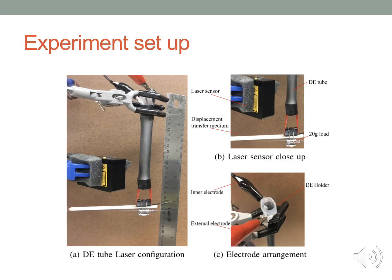And here is the experiment setup. The black and red electrodes were connected to the high-voltage amplifier to act on the movement of the DE tube. The laser sensor was used to measure the real value of the displacement of the tube, then compared with the self-sensing value and the reference signal.